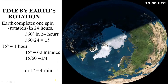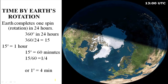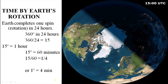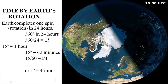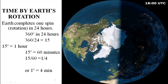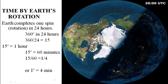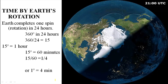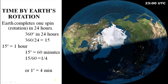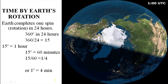If we further divide 15 degrees by 60 minutes, because in one hour we have 60 minutes, then we get 4 minutes. So in 4 minutes, Earth moves 1 degree. That is the difference — at every longitude there is a difference of 4 minutes.